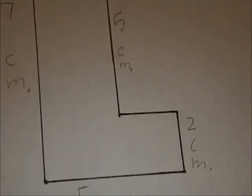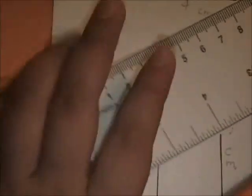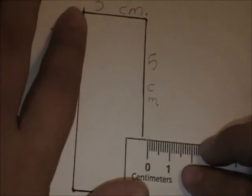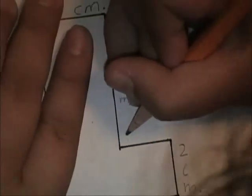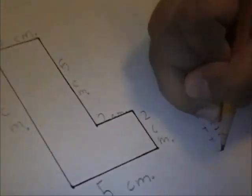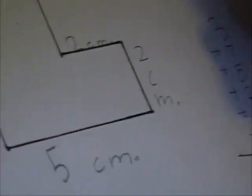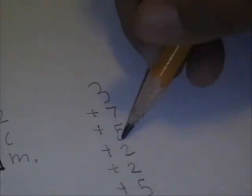You almost forgot one side. You got to get all the measurements. See how easy it is to make a mistake on these? You have to make sure you measure every side. Talk to us and tell us what numbers you are adding. Okay. I am adding three, seven, five, two twos, and another five together.